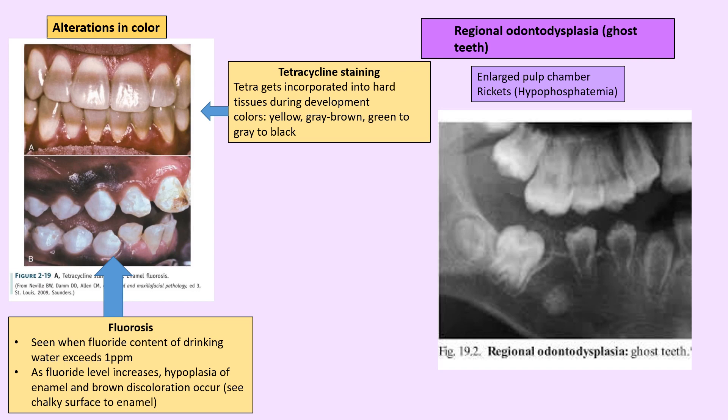Fluorosis shows brownish-white mottling. When there is excess fluoride in drinking water, it can develop fluorosis, which is actually hypoplasia of the enamel.